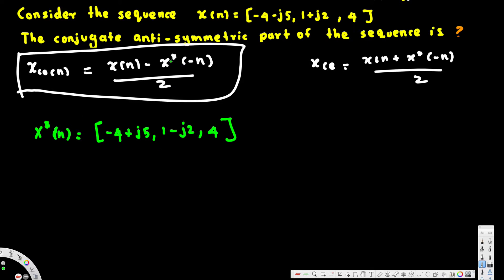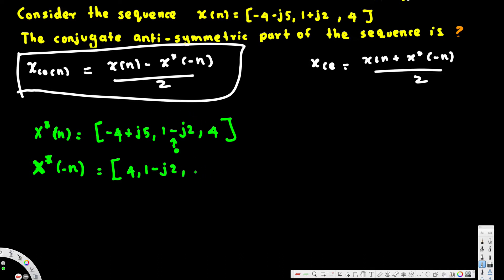Now we need x*(-n). The 0th position doesn't change. The negative 1 position and positive 1 position are swapped. So x*(-n) becomes: 4 at position -1, then 1-j2 at position 0, then -4+j5 at position +1.